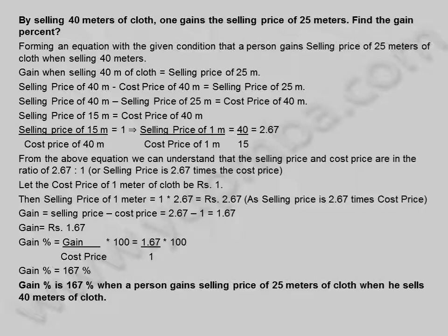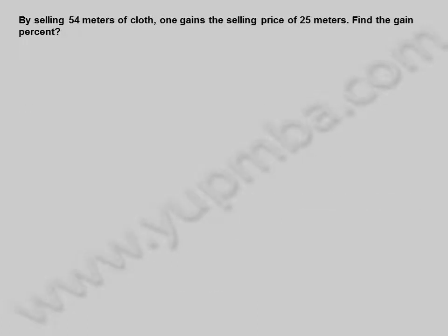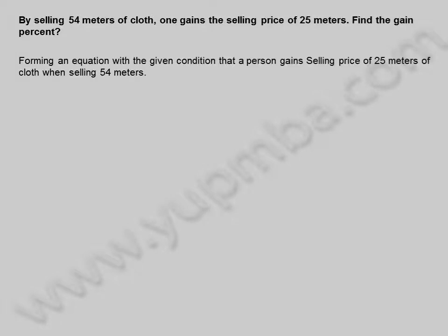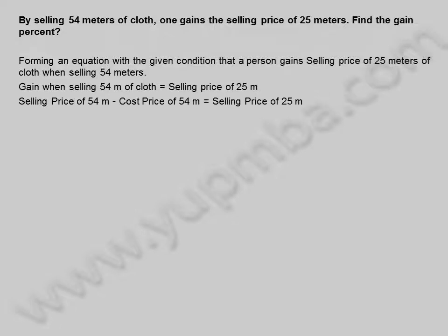The gain percentage is 167% when a person gains the selling price of 25 meters of cloth when he sells 40 meters of cloth. Let us see another example. By selling 54 meters, one gains the selling price of 25 meters. Find the gain percent. Forming an equation with the given condition that a person gains the selling price of 25 meters of cloth when selling 54 meters.